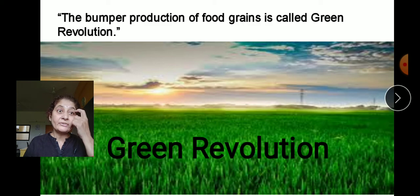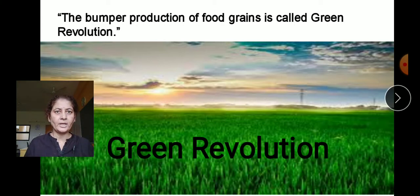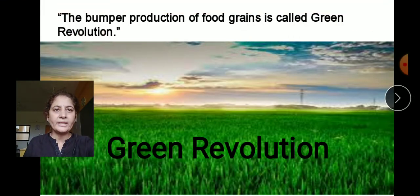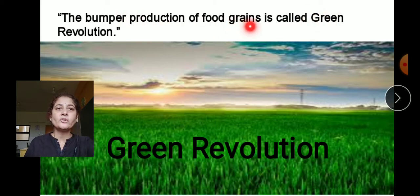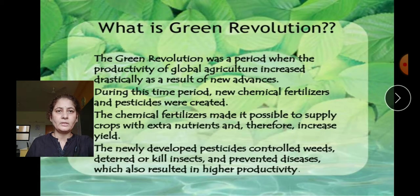Here we can see the entire area is green with crops. Crops are green — plants are also green, but crops are what we grow by ourselves. The important definition you have to learn properly is: the bumper production of food grain is called the Green Revolution.